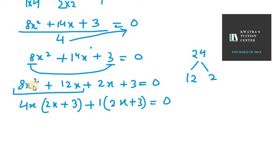So we have two terms here, that is 4x plus 1 and another is 2x plus 3 equals 0.